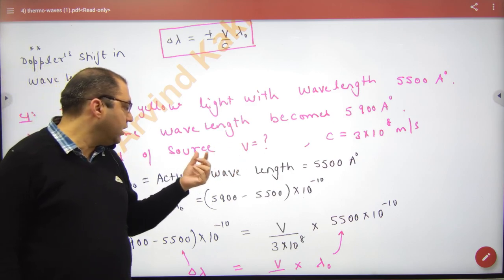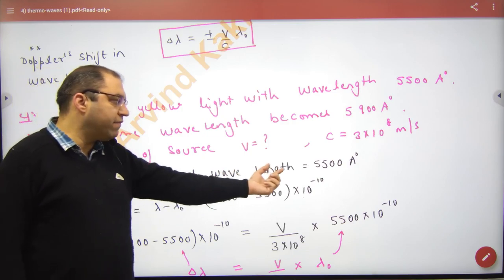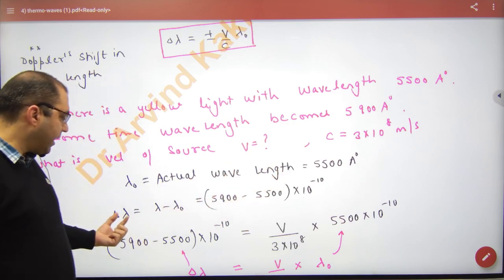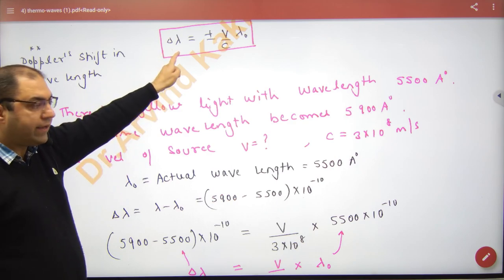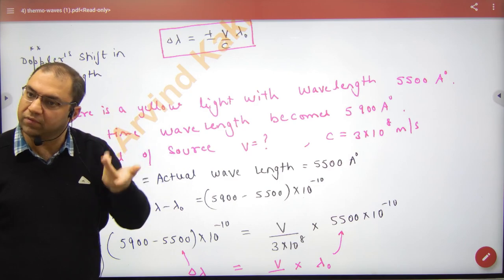What is the velocity of the source? So you know the actual wavelength lambda not. You know delta-lambda. Delta-lambda is known, lambda not is known, c is known, v can be calculated - the source's speed.